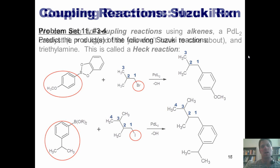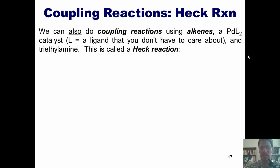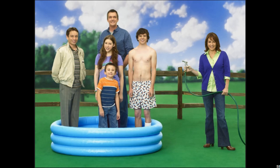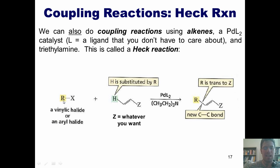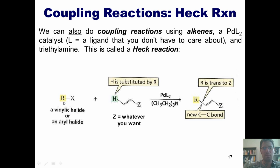The next coupling reaction in our lineup is called the Heck reaction — named after someone whose last name was Heck, not as G-rated profanity. It involves taking a vinyl or aryl halide, where R must be an sp2 hybridized carbon in a double bond or benzene ring — it cannot be sp3 hybridized — and reacting it with an alkene, using a Pd(L)2 catalyst and triethylamine. The hydrogen or alkyl group on the alkene ends up being replaced by the vinyl or aryl group from the halide, giving an alkene product where R and Z are always trans to each other.